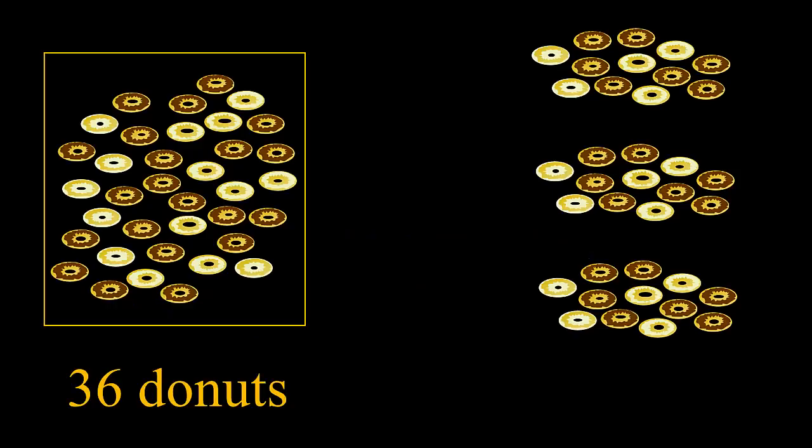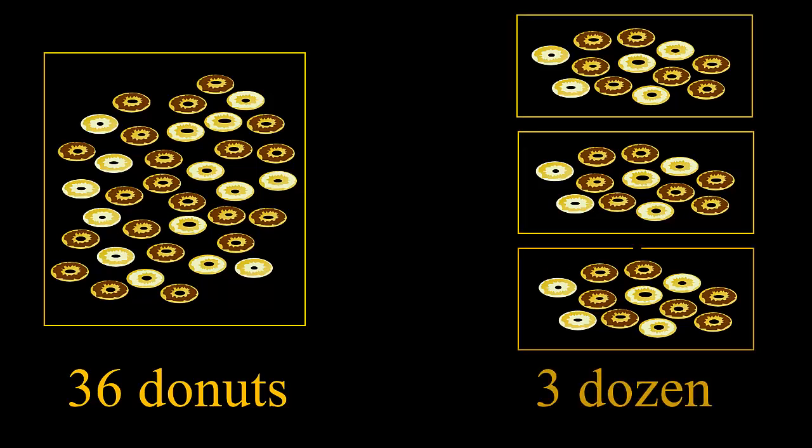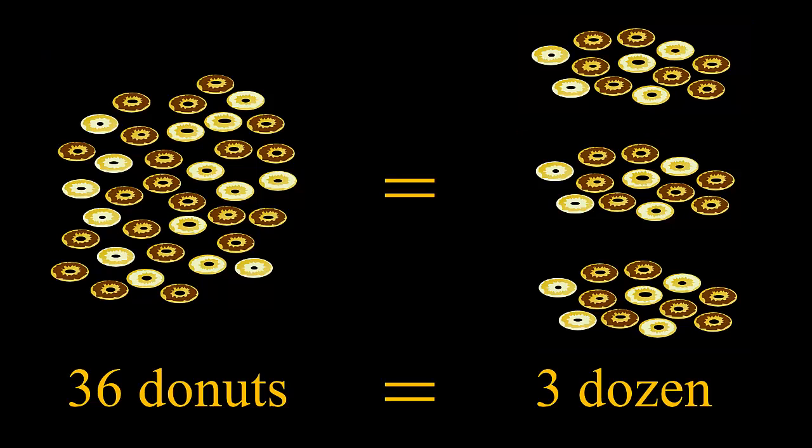Let's say you have 36 donuts. You could also express that as 3 dozen donuts. There is no change in the amount of donuts, just in the unit used in expressing the amount.